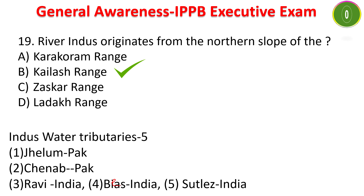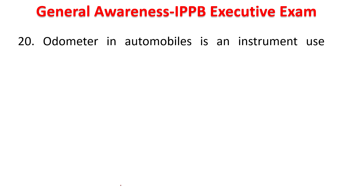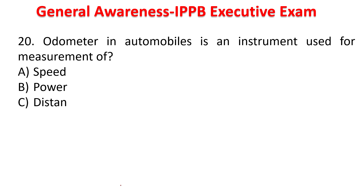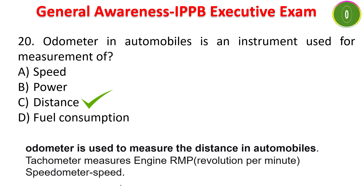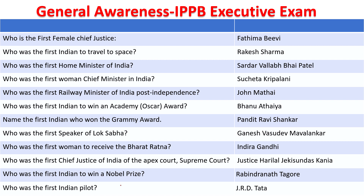Next question: an odometer in automobiles is an instrument used for measuring — speed, power, distance, or fuel consumption? The answer is distance. Odometer measures distance in automobiles. Tachometer measures engine RPM (revolutions per minute) and speedometer measures speed.